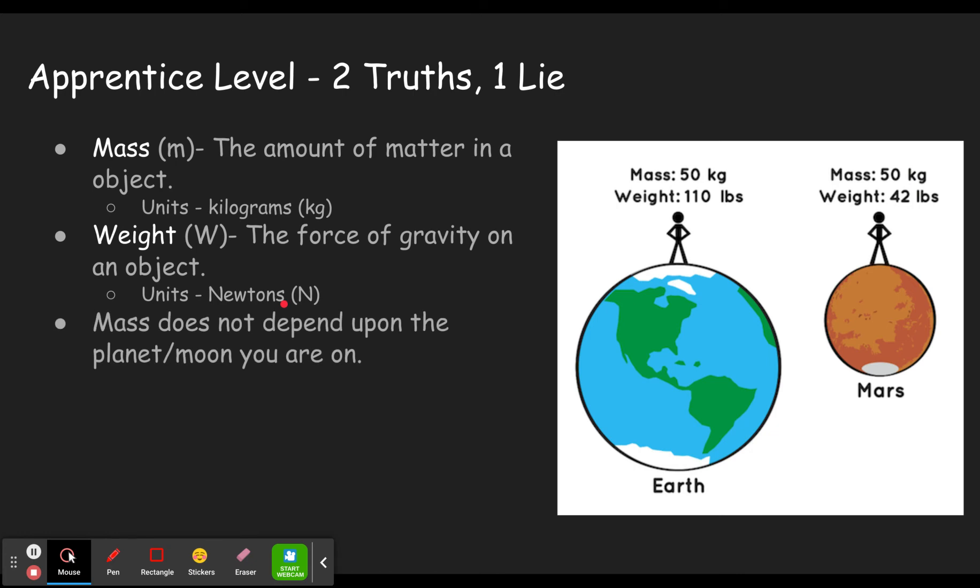And some key things here, mass. The amount of matter that makes you up does not depend on the planet or moon you are on. Weight, however, does. A bigger planet has a bigger pull of gravity, which will pull harder on you, and therefore you have a bigger weight. You're being pulled harder towards the ground.